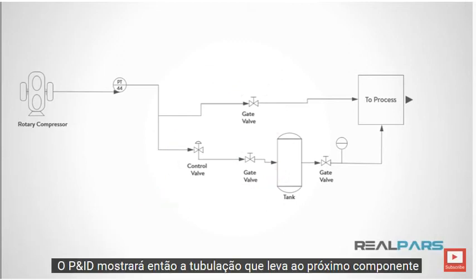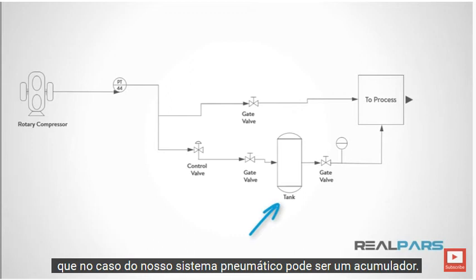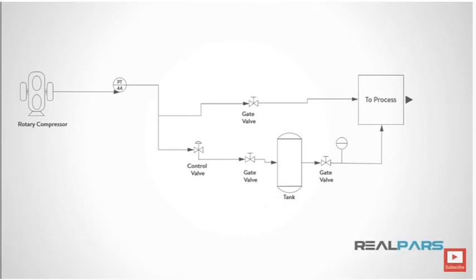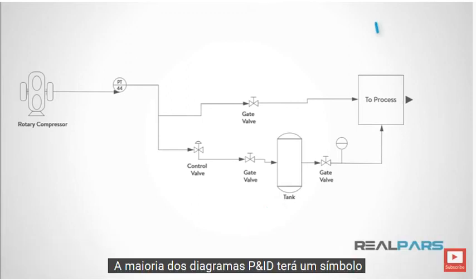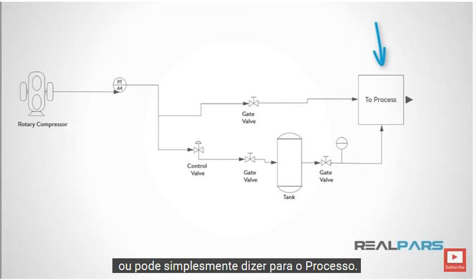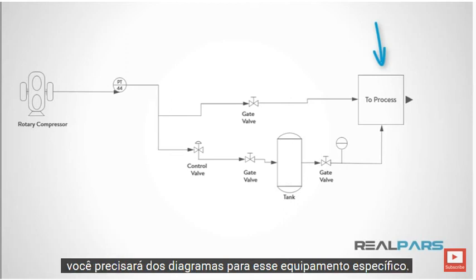The P&ID will then show piping leading to the next component, which in the case of our pneumatic system could be an accumulator. An accumulator is simply a tank or storage device for air or fluids. Most P&ID diagrams will then have a symbol with an arrow labeled for another specific piece of machinery in the facility, or it may simply say 'to process.' This will indicate that if you need to trace the system further, you will need the diagrams for that specific equipment.